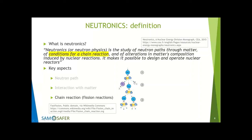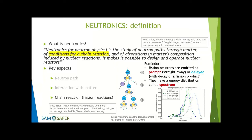As a reminder: fission neutrons are emitted in two different ways. The large majority are emitted as prompt — emitted straight away together with the fission event. Then there is a small fraction, below 1%, that has a huge role in the behavior of a nuclear reactor: these are emitted a certain time after, because they are associated with the decay of some fission products. These are called delayed. Both prompt and delayed have an energy distribution called the spectrum.